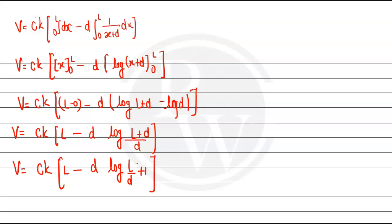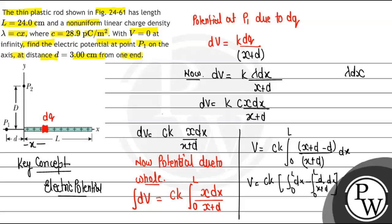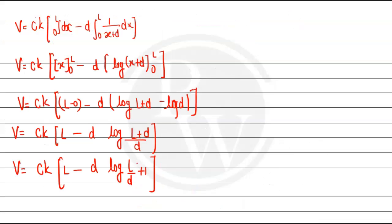Now we can write V as CK times L minus D log of L by D plus 1. Now the values are given. The value of L we have is 24 centimeters, which is going to be 0.24 meters.